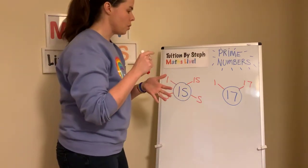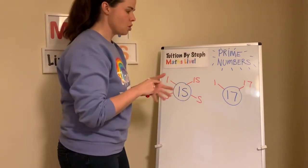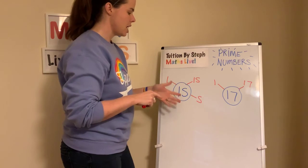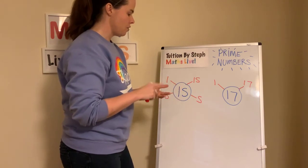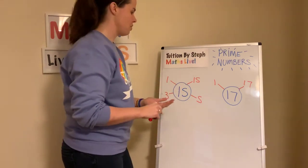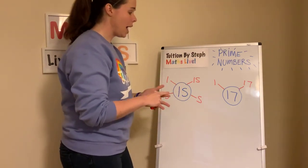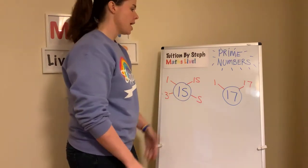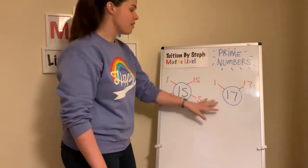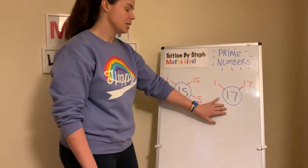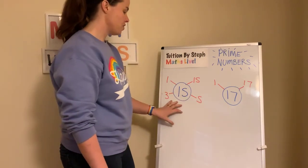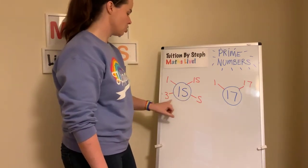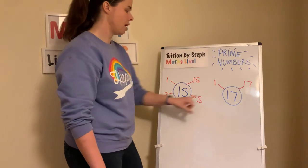17: it's not in the twos. Is it in the threes? 15, 18 — no. 4, 8, 12, 16 — not in the fours. So 17 is the prime number because 15, as you can see, has two factors apart from one and itself. Poor 17 hasn't got any.